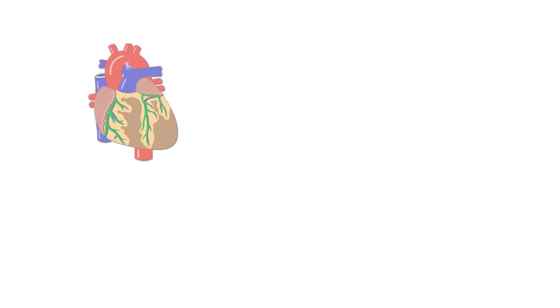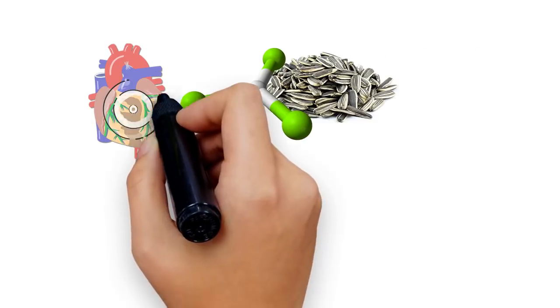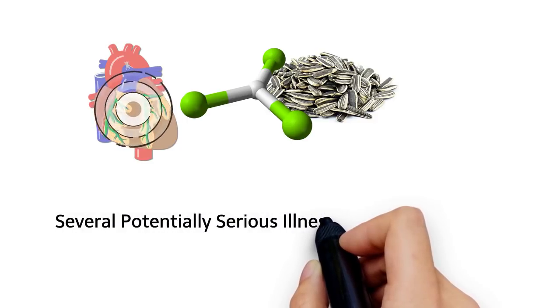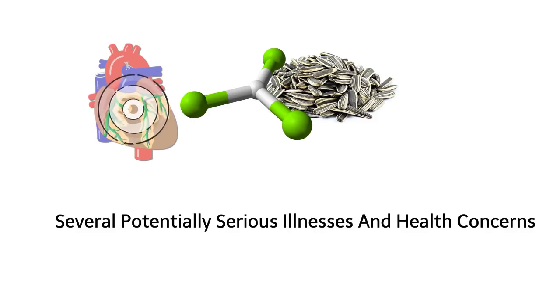Promote healthy circulation. Healthy circulation is important, especially when it comes to blood pressure and cardiovascular health. The high levels of magnesium in sunflower seeds help maintain healthy circulation, thus helping ward off several potential serious illnesses and health concerns.